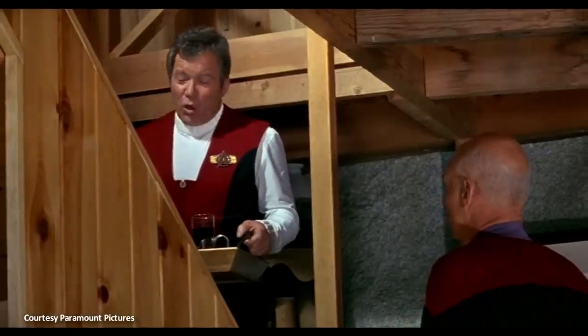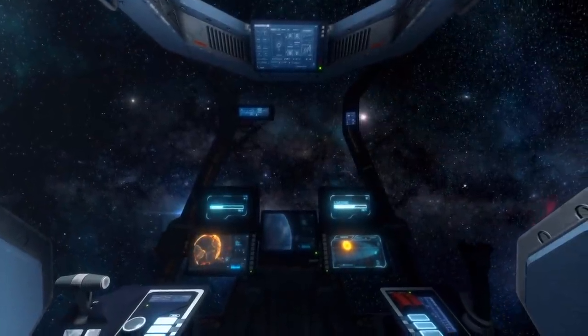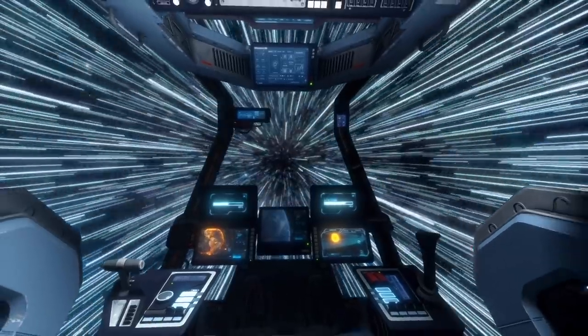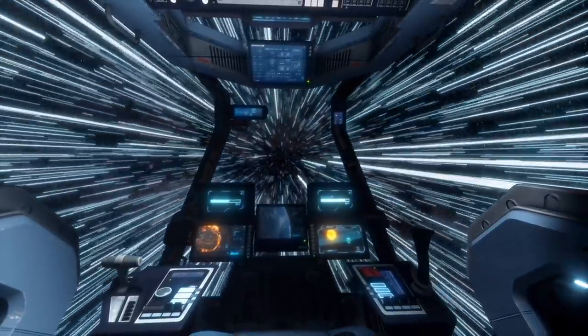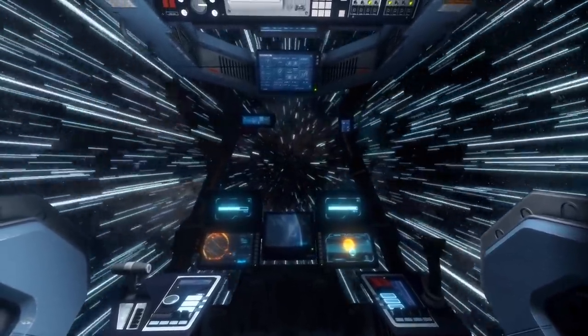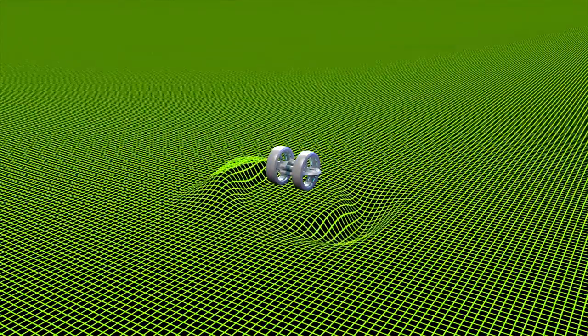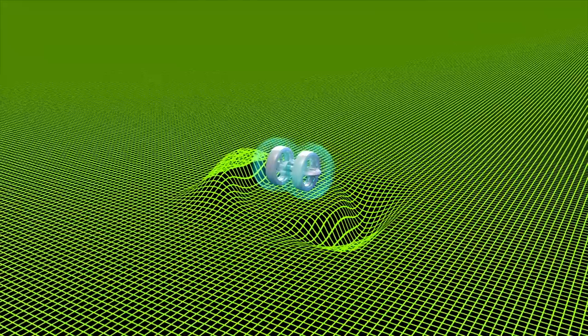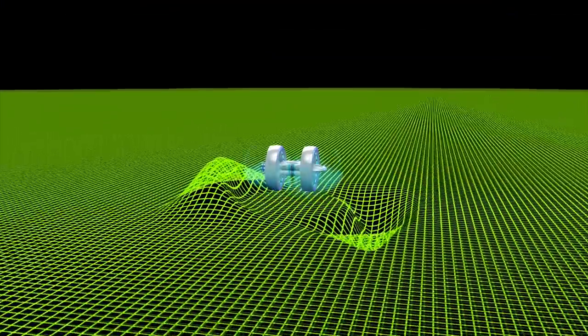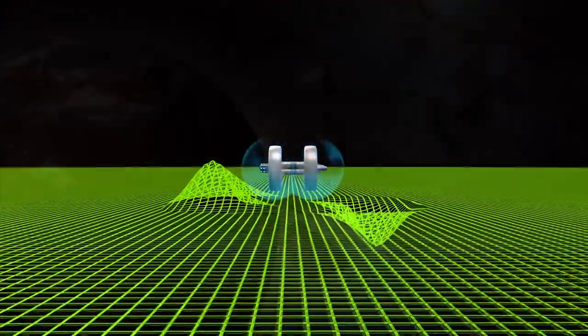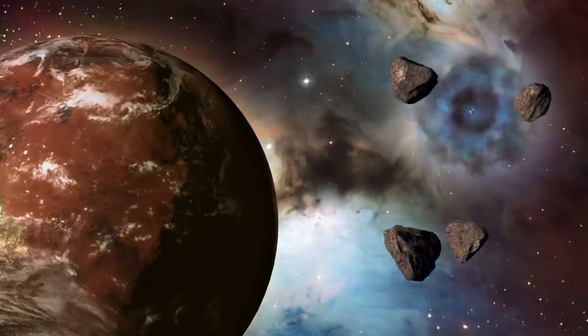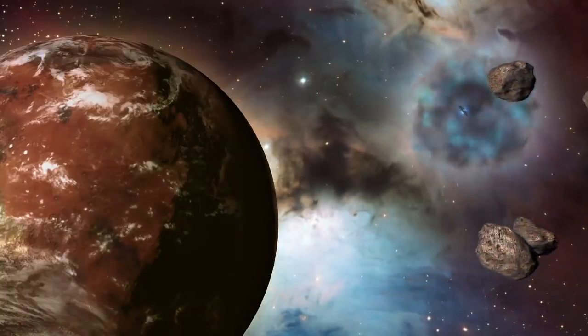In Star Trek, Captains Kirk and Picard easily traveled to distant star systems in hours using warp drives that allowed them to travel hundreds to thousands of times faster than the speed of light. If we could create even a modest warp drive that would allow us to travel, say, five times the speed of light, we could get to Proxima Centauri in about one year.